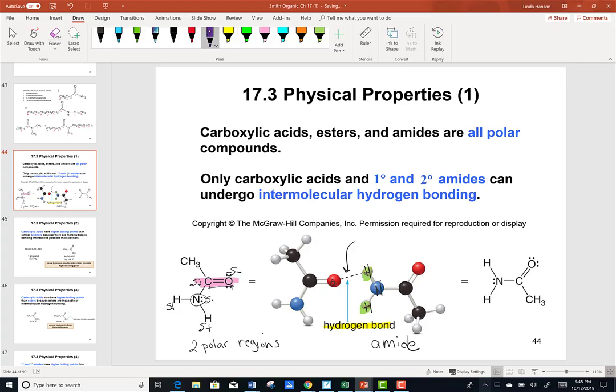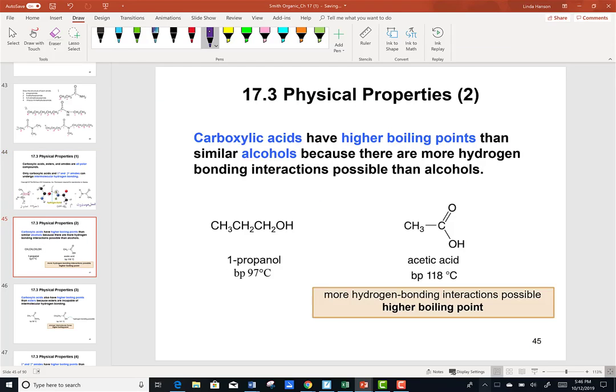And so therefore, the amide, in this particular case, which is a primary amide, has these hydrogens that can interact with the oxygen on a neighboring molecule, creating hydrogen bonds. And therefore, we see very, very strong intermolecular attractions.